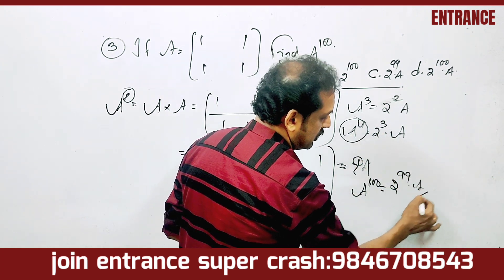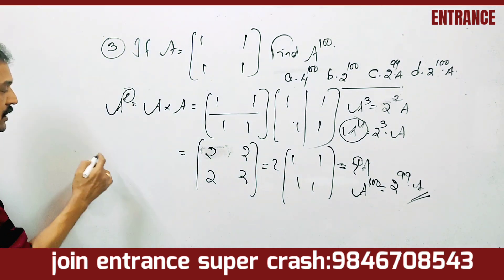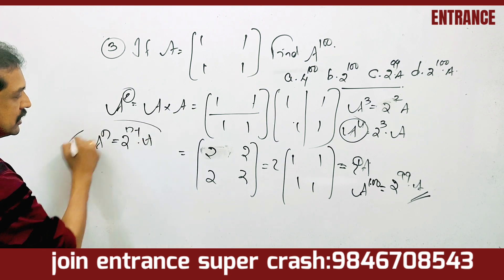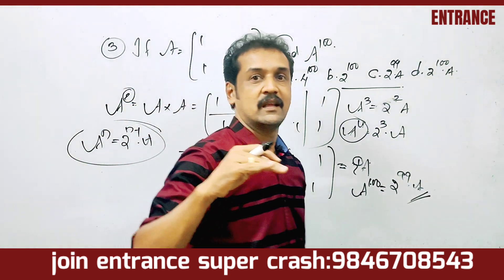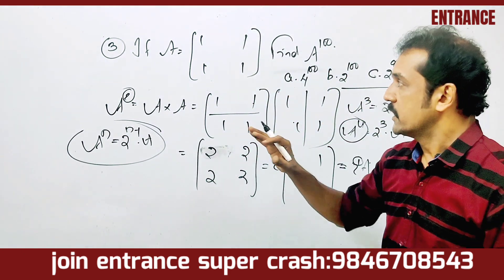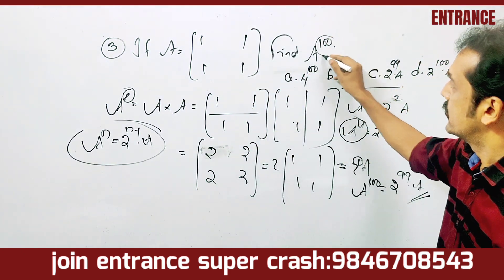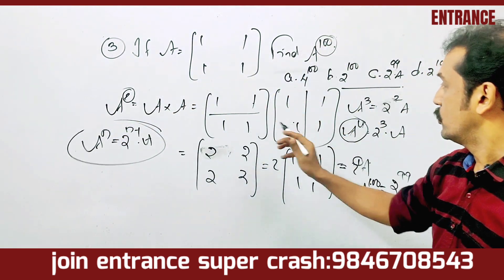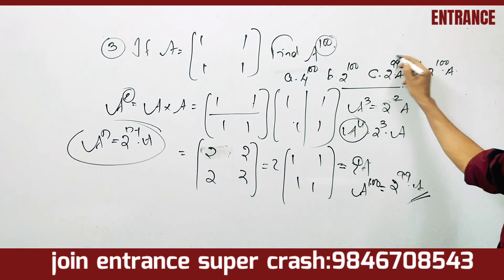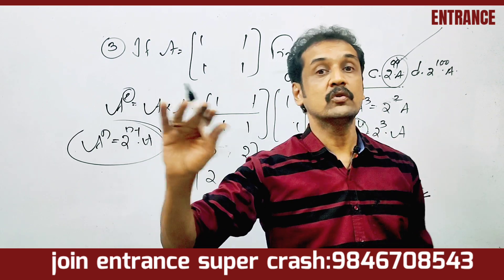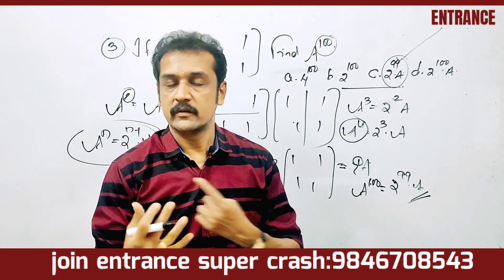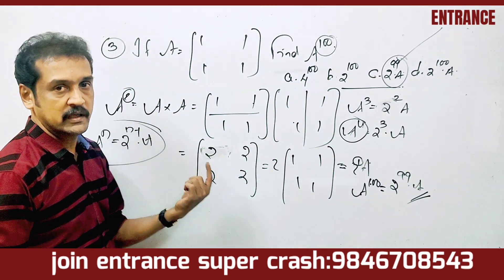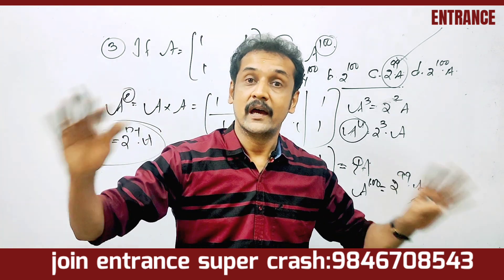In general, A raised to n equals 2 raised to n minus 1 into A. So A raised to 100 equals 2 raised to 99 into A. That is the answer.